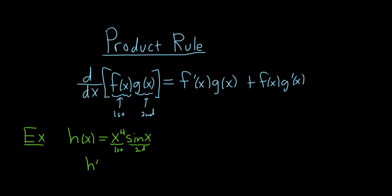So h′(x) is the derivative of the first, which is 4x³, times the second, which is sine x, plus the first, x to the fourth, times the derivative of the second. The derivative of the sine function is the cosine function. And that's it.